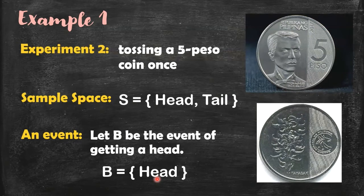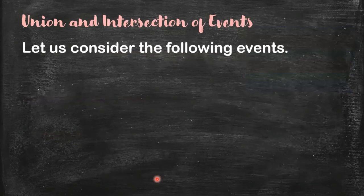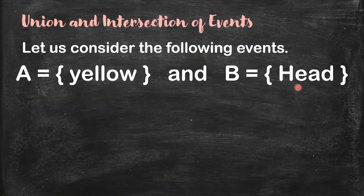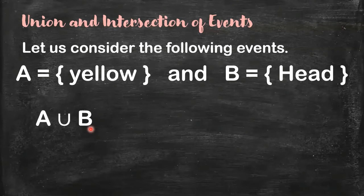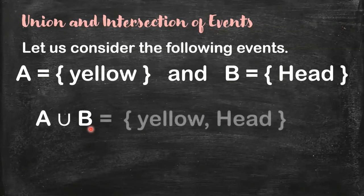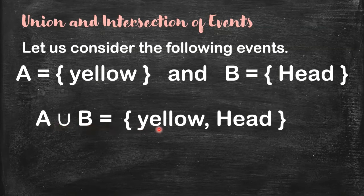Now we're going to get the union and intersection of these two events, A and B. Let us recall. Now, let us take the union of these two events. This is the symbol. A union B. How do we get the union? You combine all the elements of A and B. So A union B contains yellow and head.